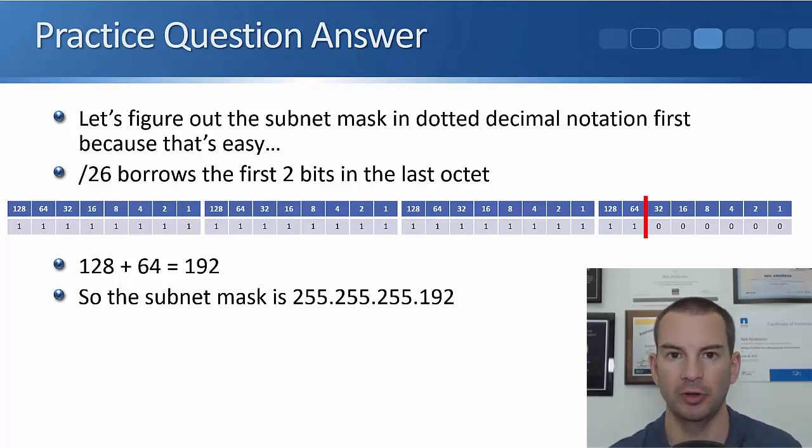Then the question that we had was we had to work out the dotted decimal notation for a /26. So just under your bit pattern at the top of the paper, write out 26 ones underneath that, and then you can put in six 0's for the host portion of the address. Also draw a line in where the line is for the subnet mask. And then we can just add these up. So obviously the first octet is all ones, it's going to be 255. The second octet is also going to be 255. The third octet is also 255. And then at the fourth octet, where we're doing the subnetting here, the ones are in the 128 and the 64. So we add 128 and 64 together to give us 192. So a /26 in dotted decimal notation is 255.255.255.192.